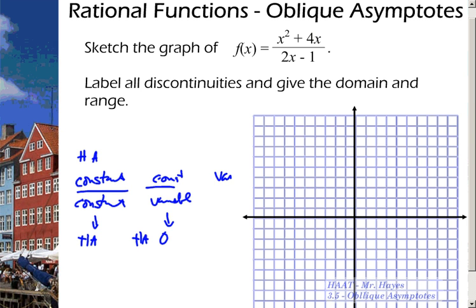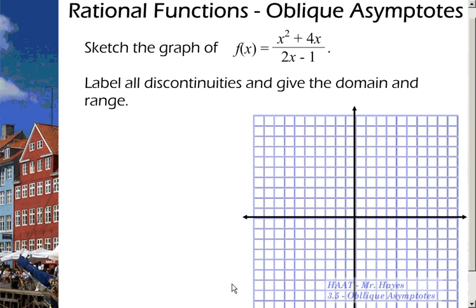And then you would have a variable over a constant, and we said that went to something that was oblique, and that's what we're going to do. And from the graphs that you saw yesterday on the suggested homework problems, those are going to be diagonal. So with that being said, let's take a look at this example that does have an oblique asymptote on it.